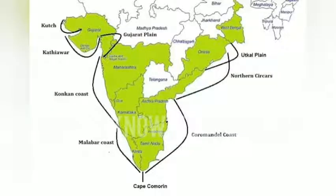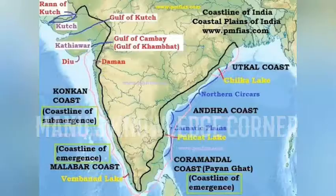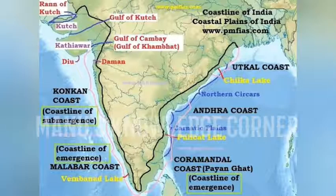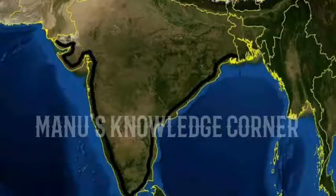Bay of Bengal plains are wide and have a large surface structure. It stretches from Mahanadi in Odisha to Cauvery deltas in Tamil Nadu. These plains are formed by rivers Mahanadi, Godavari, Krishna, and Cauvery, and are very fertile.